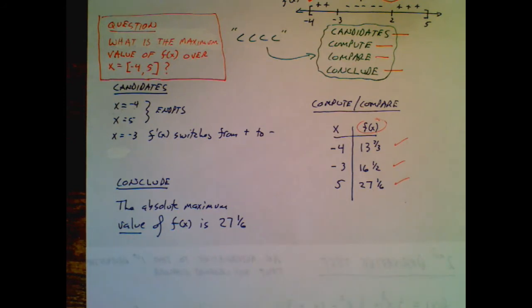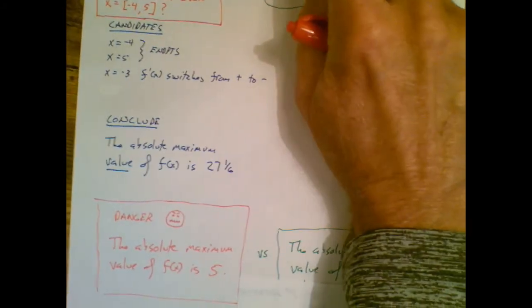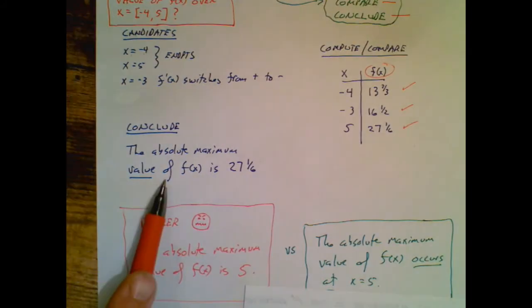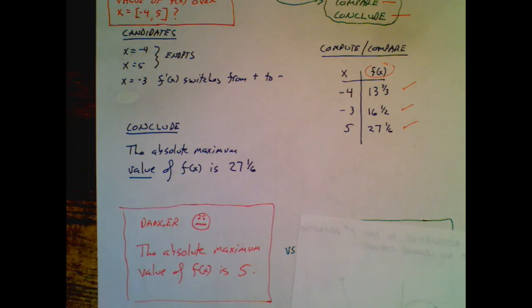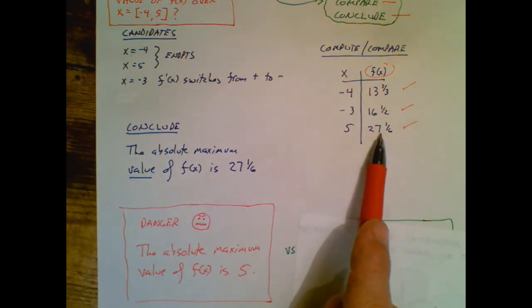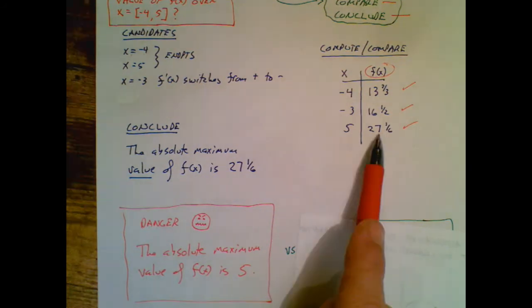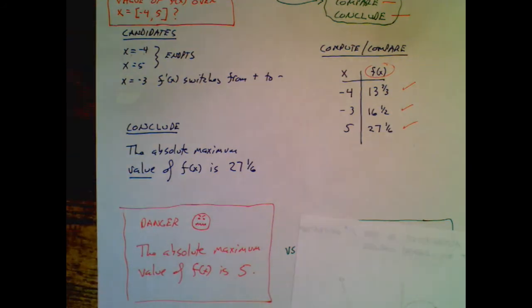Some people will write this. Not you. Of course, you wouldn't do this. But somebody you know might do this. Instead of writing this good answer, they would say something like the absolute maximum value of f(x) is 5. That's not true. The absolute maximum value of 27 and a 6 occurred at x equals 5. But this is the x value at which we got the maximum y value. So don't write this. That would be wrong.